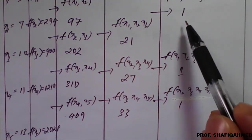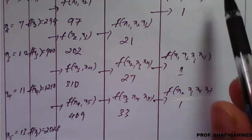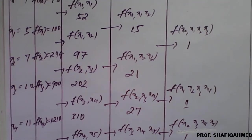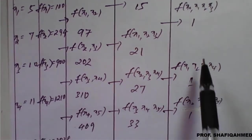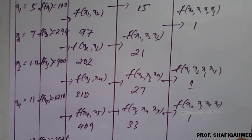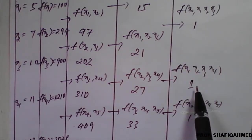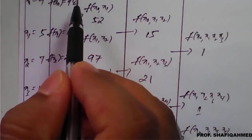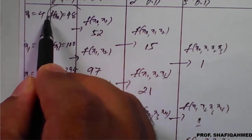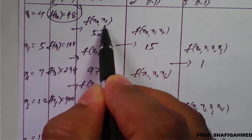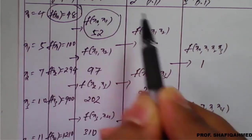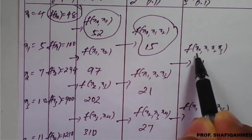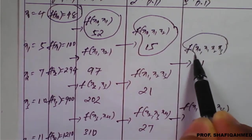The fourth divided difference would be 1 minus 1 = 0, so we stop here. For our calculation we take: f(x0) = 48, f(x0, x1) = 52, f(x0, x1, x2) = 15, and f(x0, x1, x2, x3) = 1.